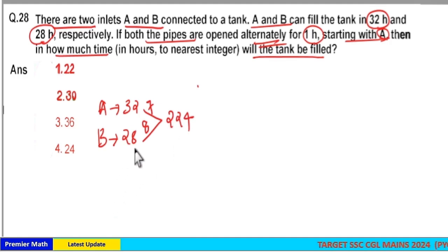224 is the total capacity of tank. Now A can fill 7 units in 1 hour. B can fill 8 units in 1 hour. Together A and B can fill 8 plus 7, 15 units in 1 hour.